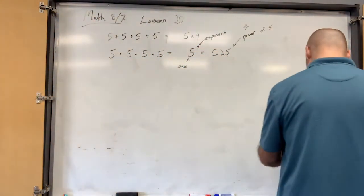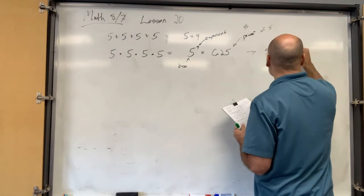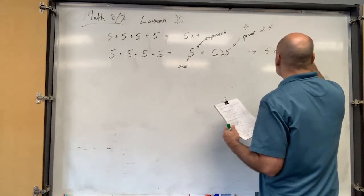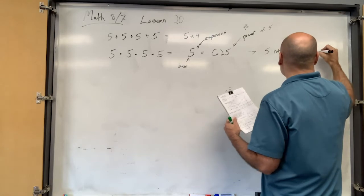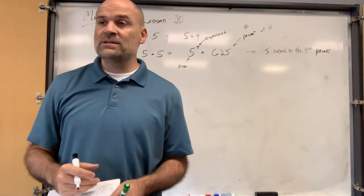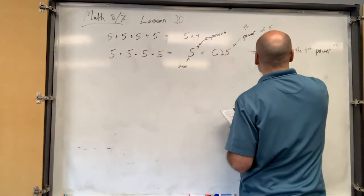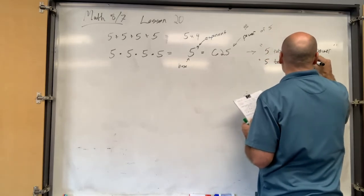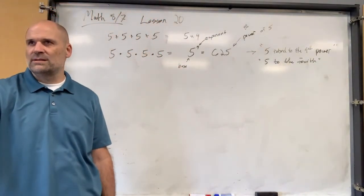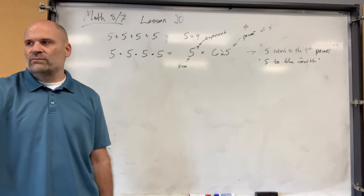We can say '5 raised to the 4th power.' No one really says that anymore. People will shorten that to '5 raised to the 4th' or just '5 to the 4th' or '5 to the 4th power.' '5 to the 4th' is probably the least number of words you need to say that statement. Meaning 5 raised to the 4th power.